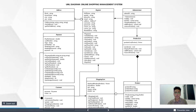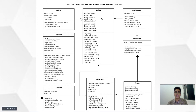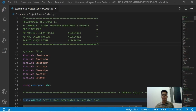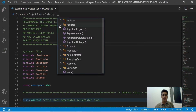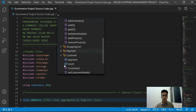After that we drew a class diagram which consists of a total of eight classes: Address, Register, Administrator, Product, List, Product, Shopping Cart, Customer, and Payment. Throughout this program we are using association, aggregation, composition, inheritance, polymorphism, and exception handling.